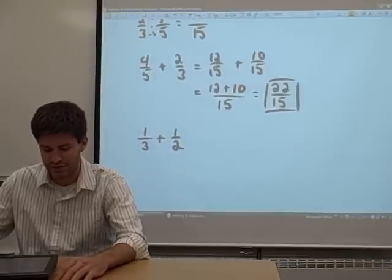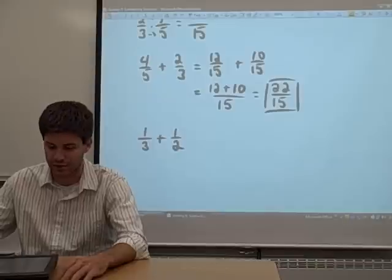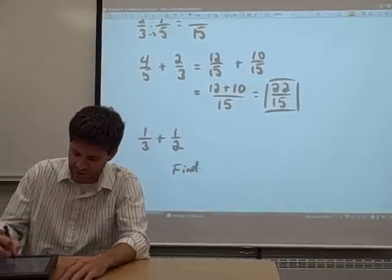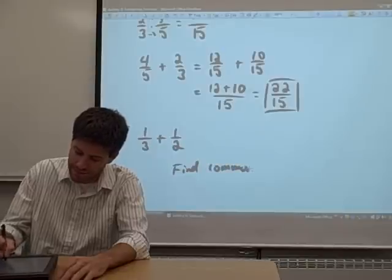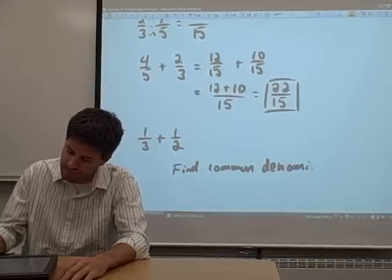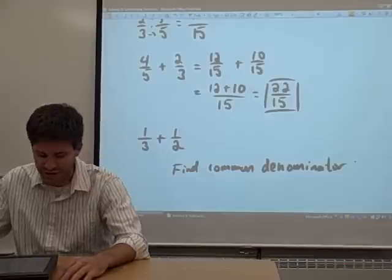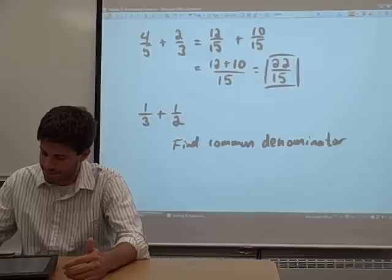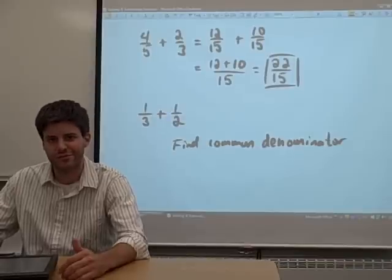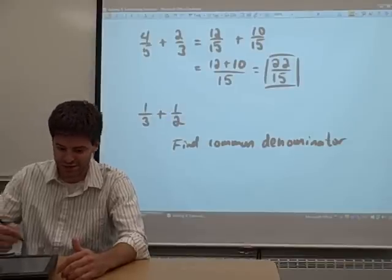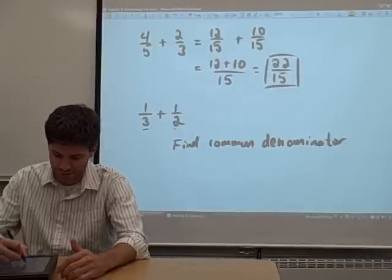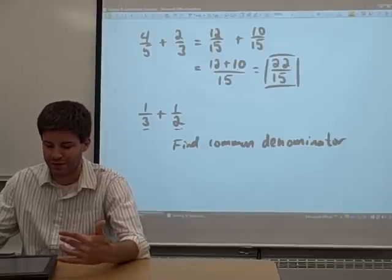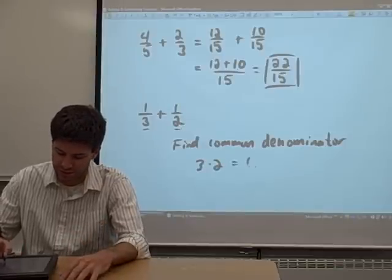So to do this, what we're going to do is find a common denominator. So you have to look at those two fractions and figure out what can my common denominator be. The brute force technique of finding a common denominator is taking one denominator and multiplying it by the other one. So just take the two denominators, multiply them together. Three times two equals six.